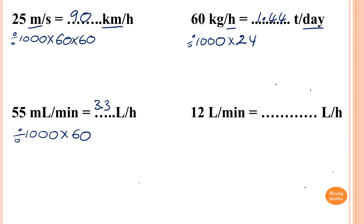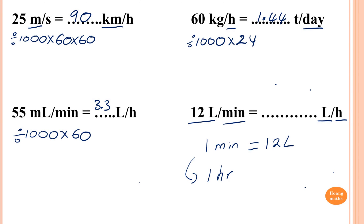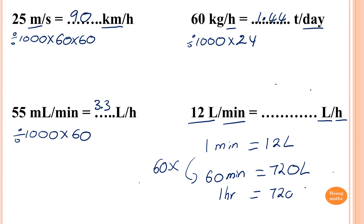12 liters per minute, convert to liters per hour. Same unit but different time — minute to hour. Write down: 1 minute equals 12 liters. I want 1 hour. 1 hour is 60 minutes. So from 1 minute to 60 minutes, you times by 60. Times 60 on the left, same on the right. 6 times 12 is 72, then add a zero — so 1 hour equals 720 liters. In other words, 720 liters per hour.